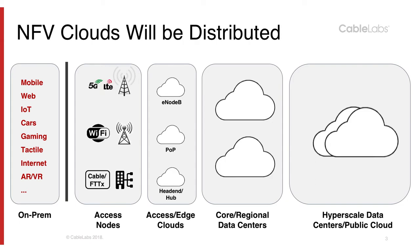Let's look at cloud topologies and their impact on network services. Here we see three types of clouds, and for each type you can have multiple instances — hence the notion of distributed clouds. On the left-hand side you have access or edge clouds, where you have a head-end or hub in a cable or fiber environment, a point of presence in Wi-Fi access, or an eNodeB for wireless users. These clouds are highly constrained, very small edge environments.